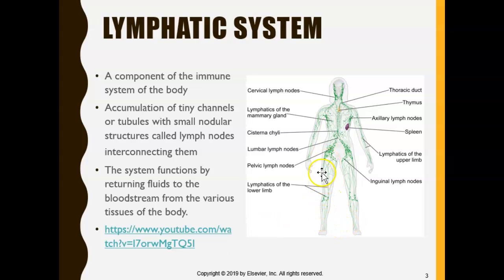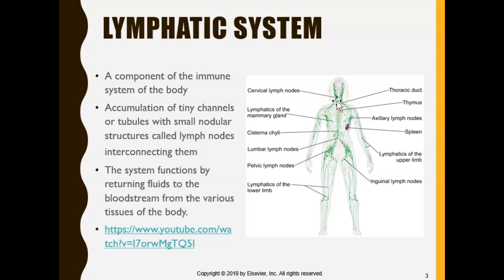The lymphatic system carries lymph fluid all over your body, and then as you hit a node — you see those dots over here, those are lymph nodes — we're going to focus on the ones in the head and neck area. When you pass through a lymph node, that's your security checkpoint. They do a full pat-down. The lymph node acts as a filter, removing all the waste, toxins, and bad stuff from your body.